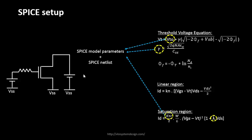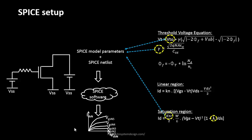You provide the SPICE model parameters plus the SPICE netlist. I'll explain exactly how we derive the netlist from the MOSFET we have been studying. When both are fed to the SPICE software, you get the drain current axis, the voltage axis, the IDS vs. VDS curves at different values of VGS. For example, we looked at VGS equal to 1 volt, where part of the curve was in the linear region and part in saturation.